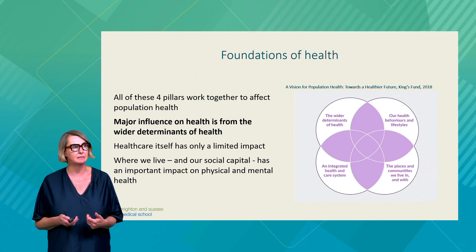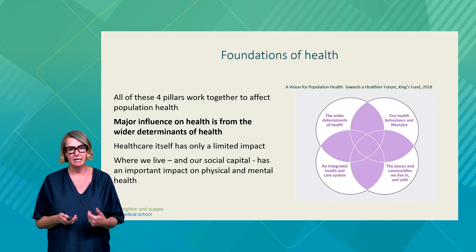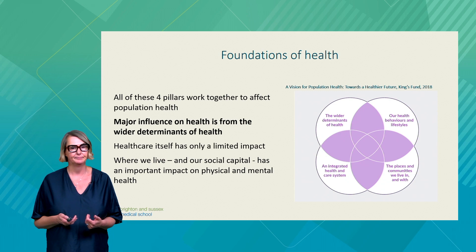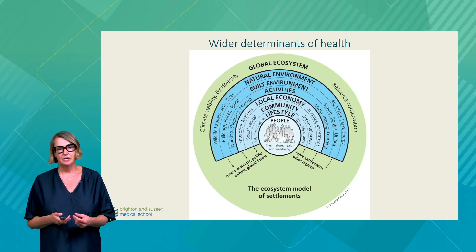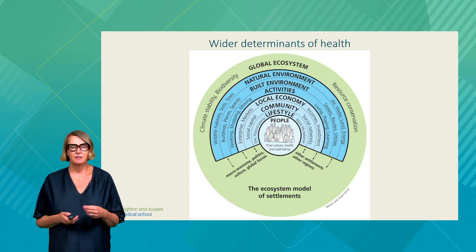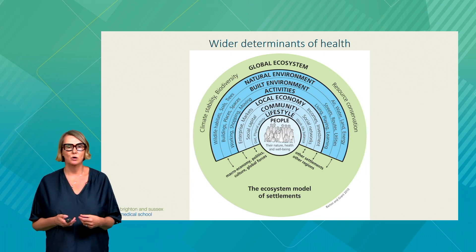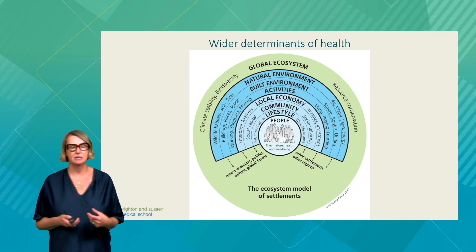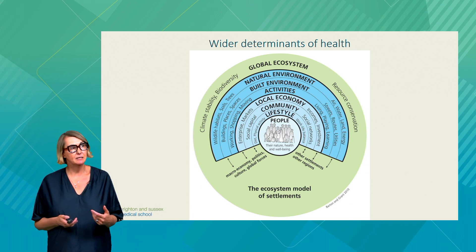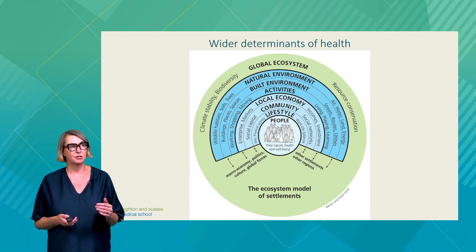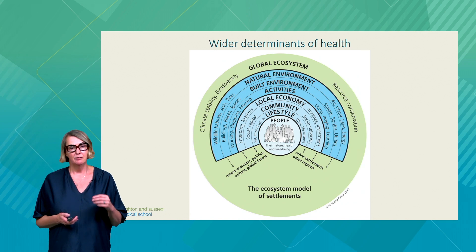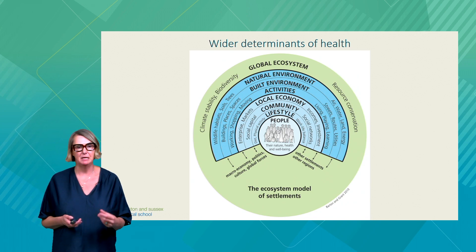Where we live, our social capital, the environments that we live in — these have really important impacts on both our physical and mental health. This slide is a modification of the well-recognised Dahlgren and Whitehead model of the wider determinants of health. This more recent version by Barton and Grant has inserted a layer over the top called the global ecosystem. Right at the centre of this, you can see people and people's health.